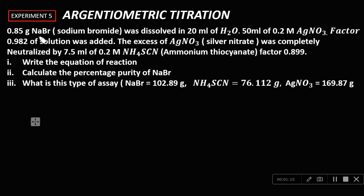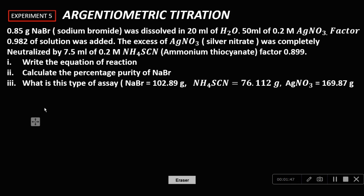You have 0.85 gram of sodium bromide dissolved in 20 mL of water, then 50 mL of 0.2 mol silver nitrate solution was added. The first thing is to write the equations of reaction. In this question you have more than one equation of reaction.